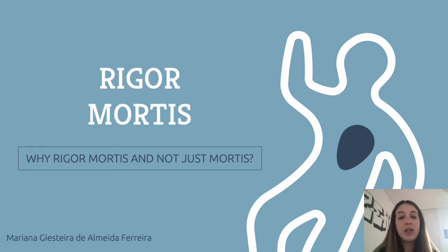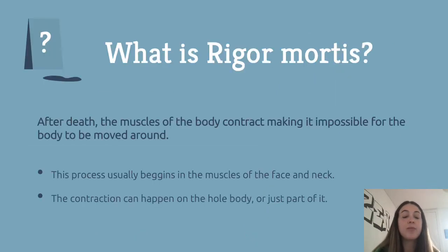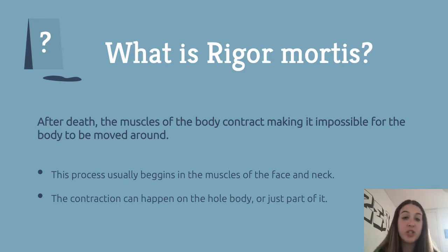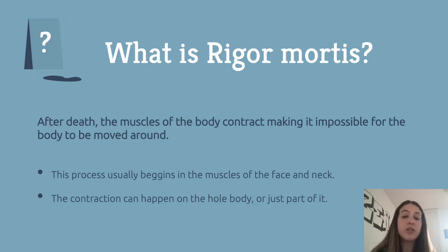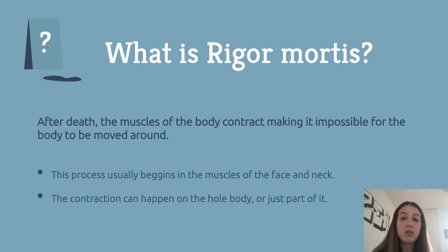Hi, my name is Mariana and my work presentation is about rigor mortis and what it involves. So what is rigor mortis? Rigor mortis, also known as post-mortem rigidity, is normally understood as a muscle contraction of the whole body or just part of it, beginning in the muscles of the face and neck, during which the muscles stiffen in a way that it becomes impossible to move them.